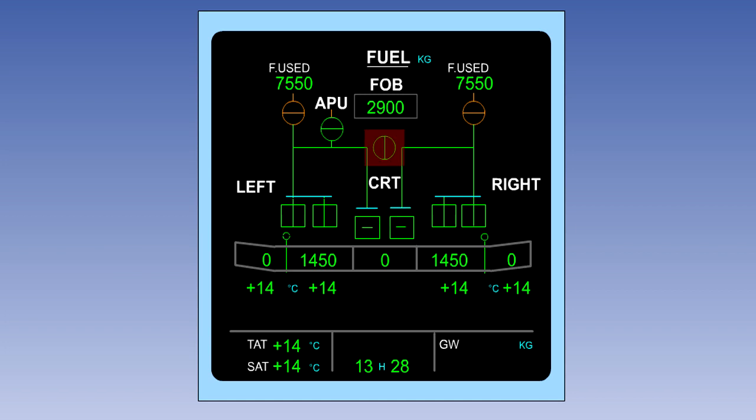The cross-feed valve indication is inline when the valve is open, and cross-line when it is closed. The engine and auxiliary power unit shut-off valve indications operate in a similar manner.